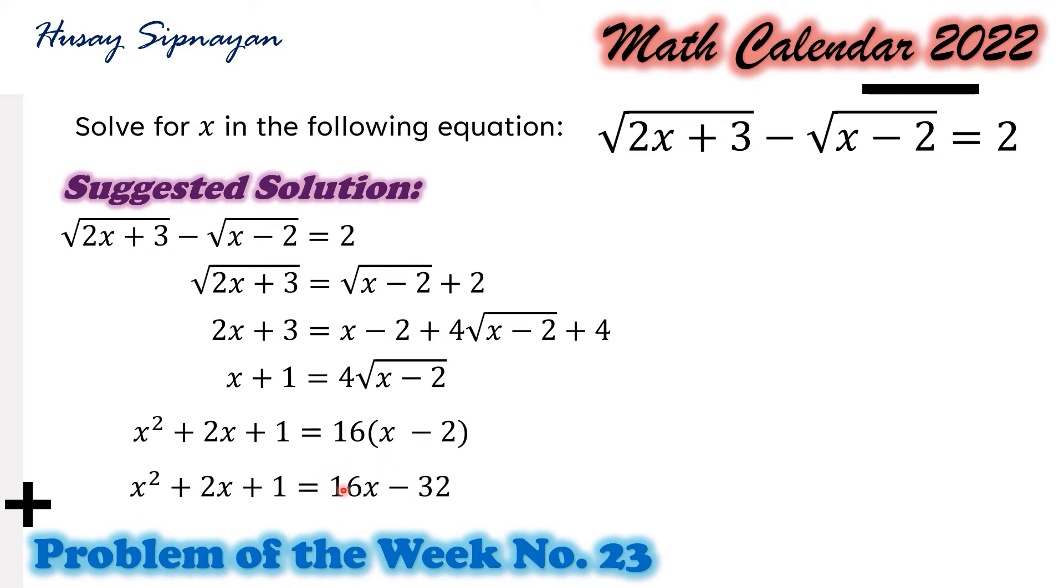On the right hand side, we apply the distributive property. We have 16x minus 32. Then we have a quadratic equation. Rewriting the quadratic equation with 0 on the right hand side, we have x squared minus 14x plus 33 equals 0.